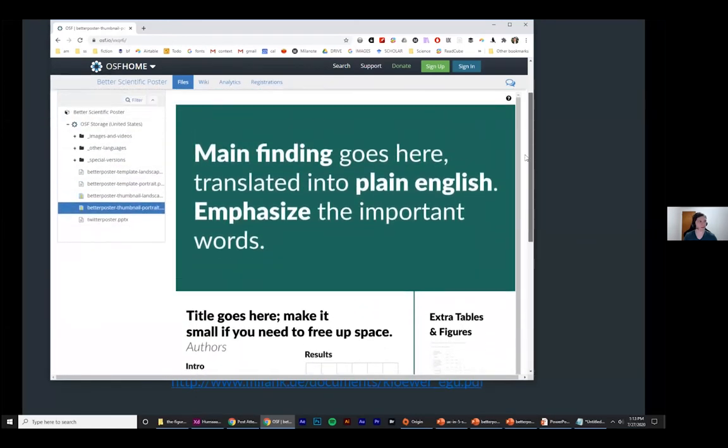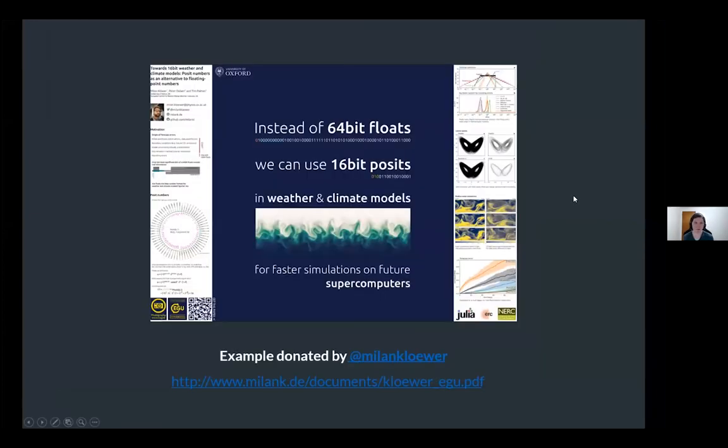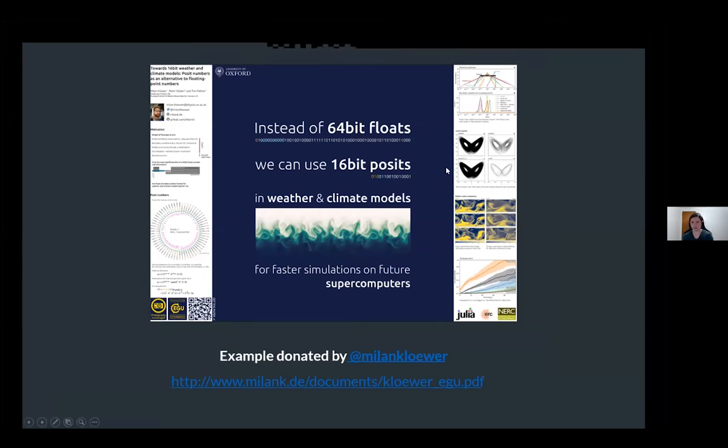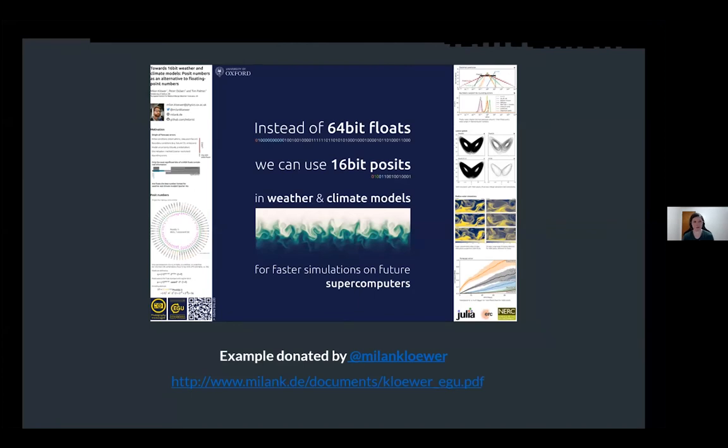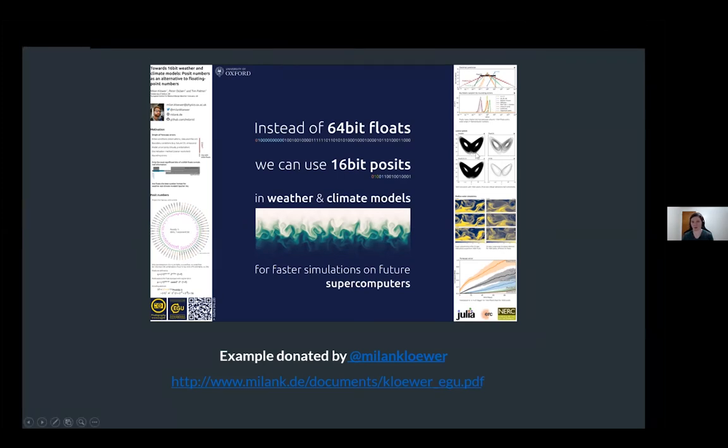So this is the portrait version. And this is the landscape version. So you can, all that stuff I said, hopefully it makes sense now that you can see it. You have the big main finding in the middle with a key figure. You can read this at a distance. The other thing the sidebars do is they help you orient. Like you, if you were looking for the person's contact details, you could probably go right here pretty quickly. The other side is if you were looking for just the figures, they feel crammed over here. But if you were standing an inch from them, they'd probably be pretty readable.